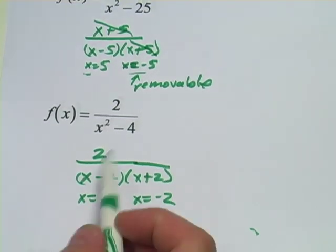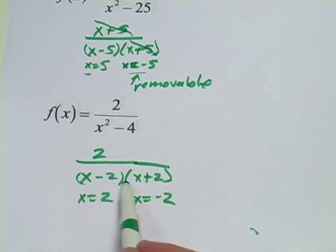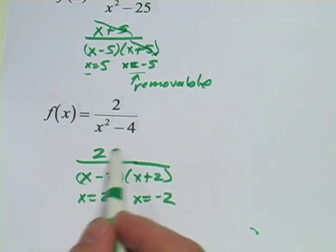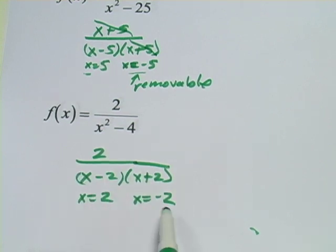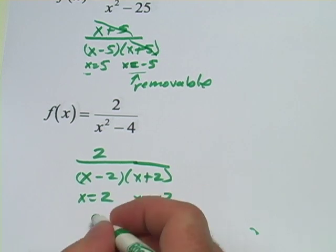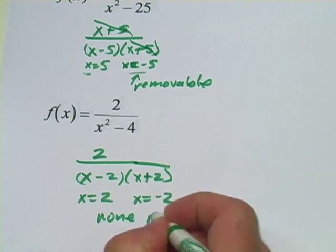And we can see that nothing cancels here. We've got a 2 up top, but it's not an x minus 2 or an x plus 2, so none of these factors is going to cancel. So we've got discontinuities at x equals 2 and x equals negative 2, but none are removable.